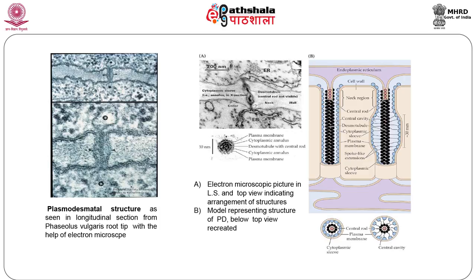In 1990, Roberts modified the structural model, indicating the presence of contractile proteins surrounding the neck region. It was also proposed that the central rod is surrounded by electron-dense strands made up of actin and myosin. Of these, myosin has been shown to have high ATPase domain activity, which is implicated in active transport across the plasmodesmata.